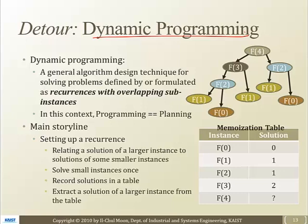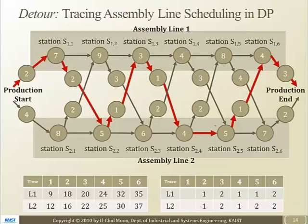In dynamic programming, to avoid the recurrence with overlapping sub-instances, we utilize the memoization table, so that we can grow our solution sets to our target solution. This was one thing actually related to the shortest path finding problem.